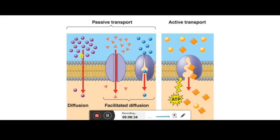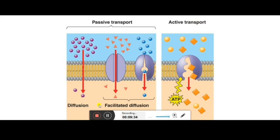Diffusion is the movement of molecules from higher concentration to lower concentration. This is the simple mixing of molecules — just like making a sugar solution, the sugar dissolves and its molecules diffuse in between the water molecules. Through simple diffusion, water, minerals, and gases — that means liquid, solid, and gas molecules — all kinds of molecules can move from higher concentration to lower concentration.